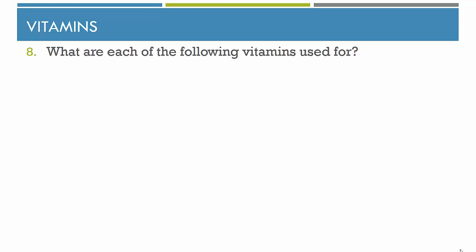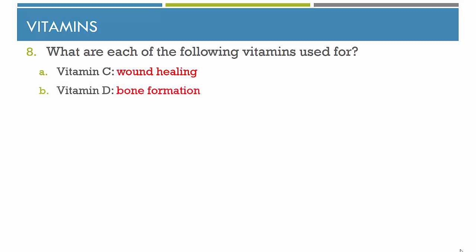What are each of the following vitamins used for? Vitamin C is used for wound healing. Vitamin D is important in bone formation. And vitamin K helps to clot blood.